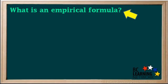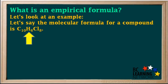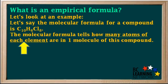Now what exactly is an empirical formula? Let's look at an example of a different compound. Let's say the molecular formula for a compound is C10H6Cl8. The molecular formula tells us how many atoms of each element are in one molecule of this compound. So one molecule has 10 C atoms, 6 H atoms, and 8 Cl atoms.